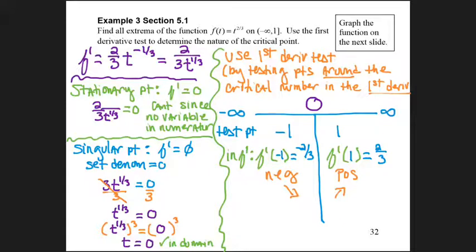Because negative 2/3 was negative, I am decreasing on the left of my critical number, and because f'(1) was 2/3, a positive number, I was increasing after my critical number. This tells me I have a relative min. If I went from walking downhill to uphill, I just walked past a minimum point.